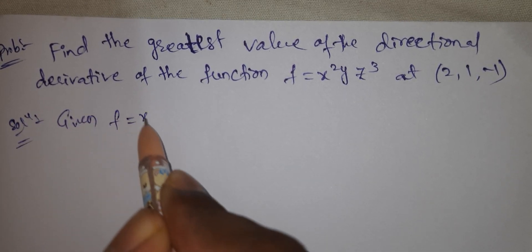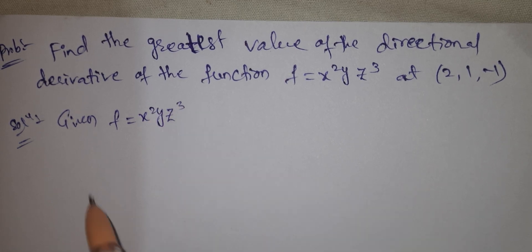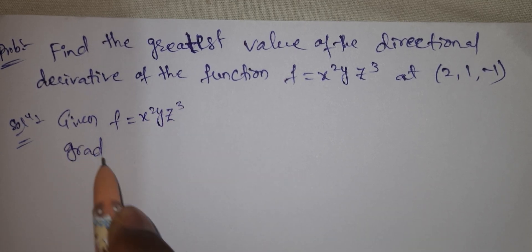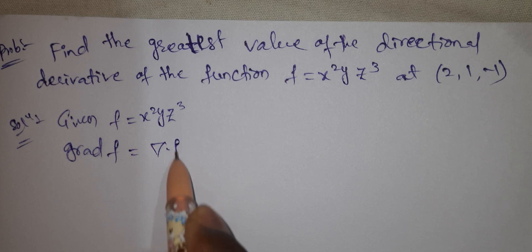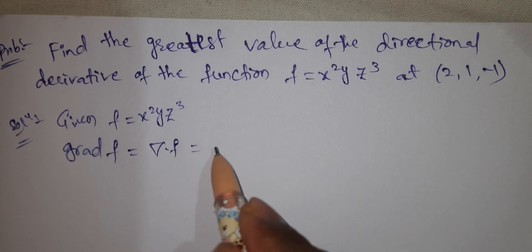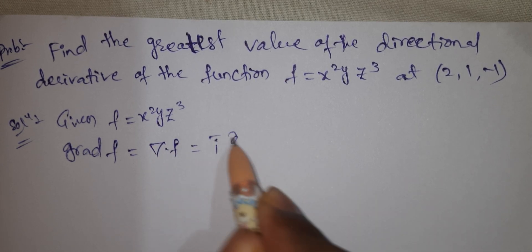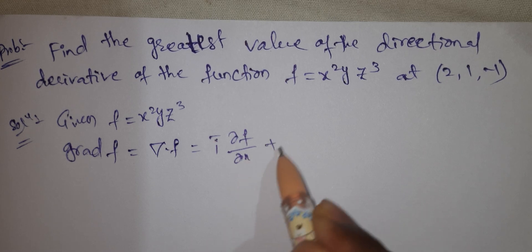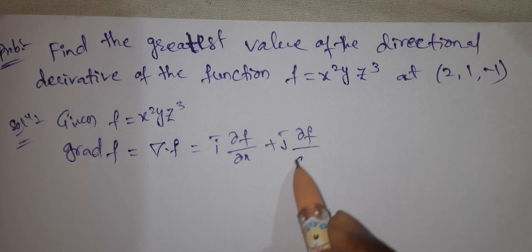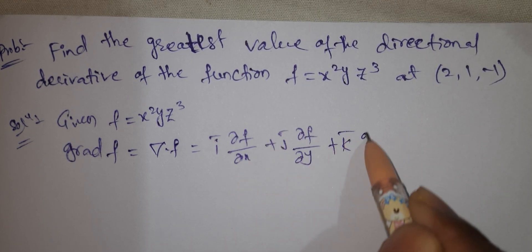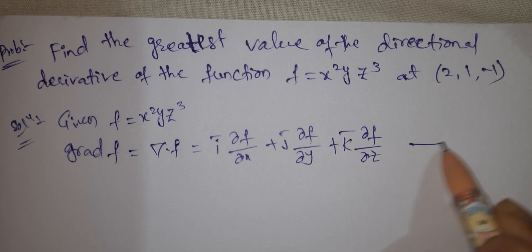Given f equals x squared yz cubed. I will find the gradient f. Del dot f equals i bar ∂f/∂x plus j bar ∂f/∂y plus k bar ∂f/∂z. This is equation 1.